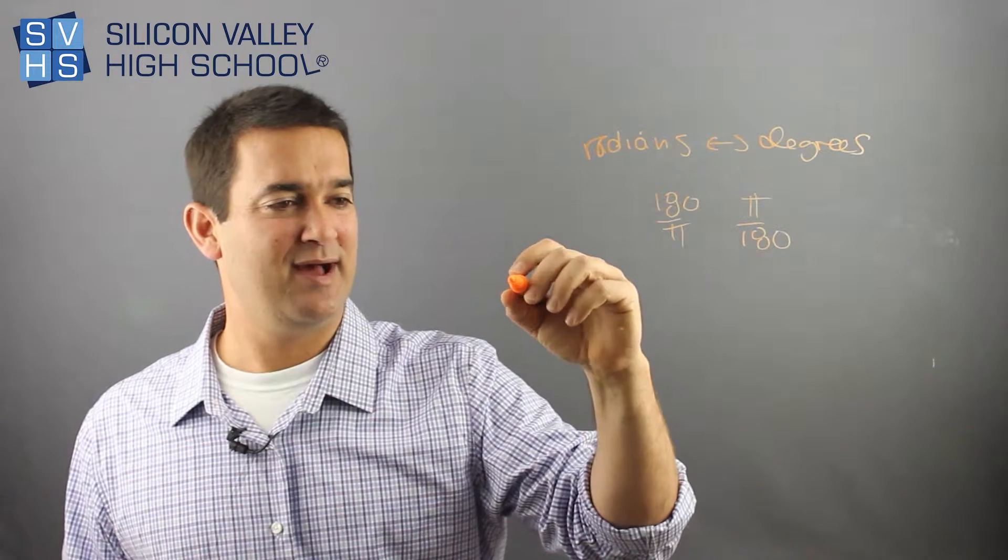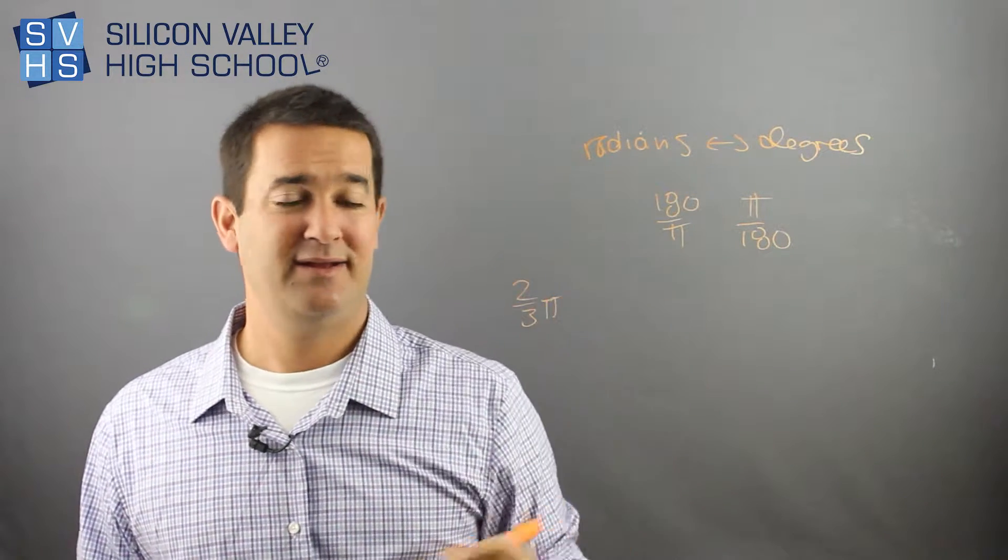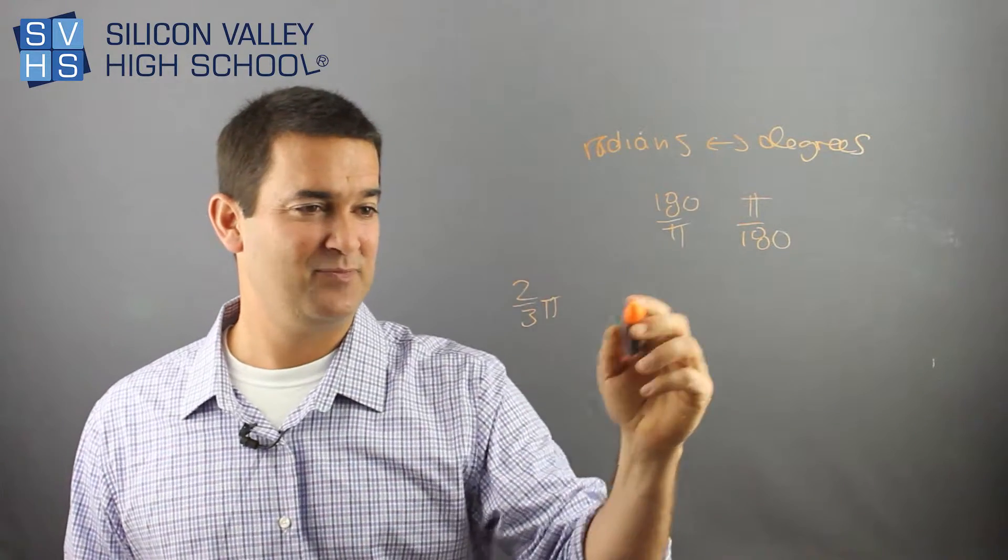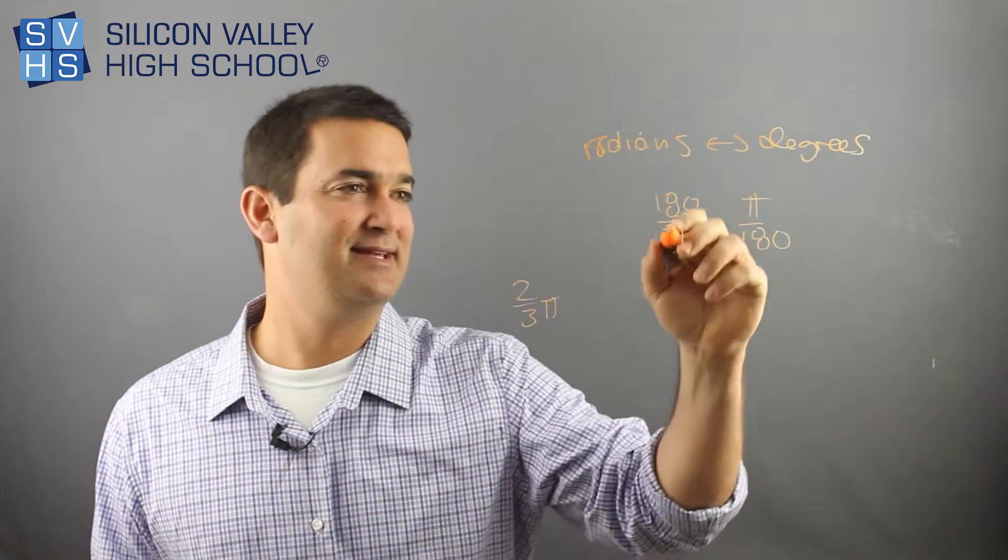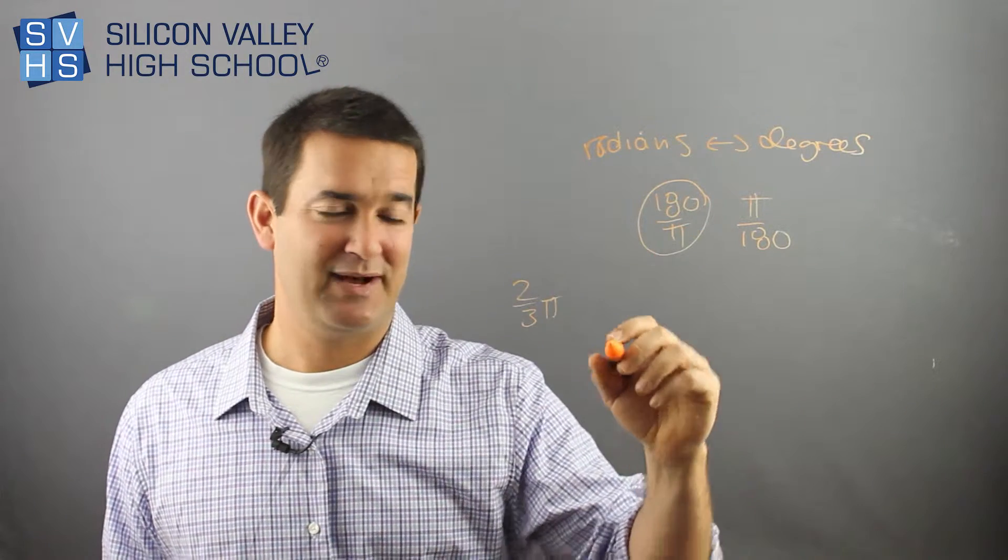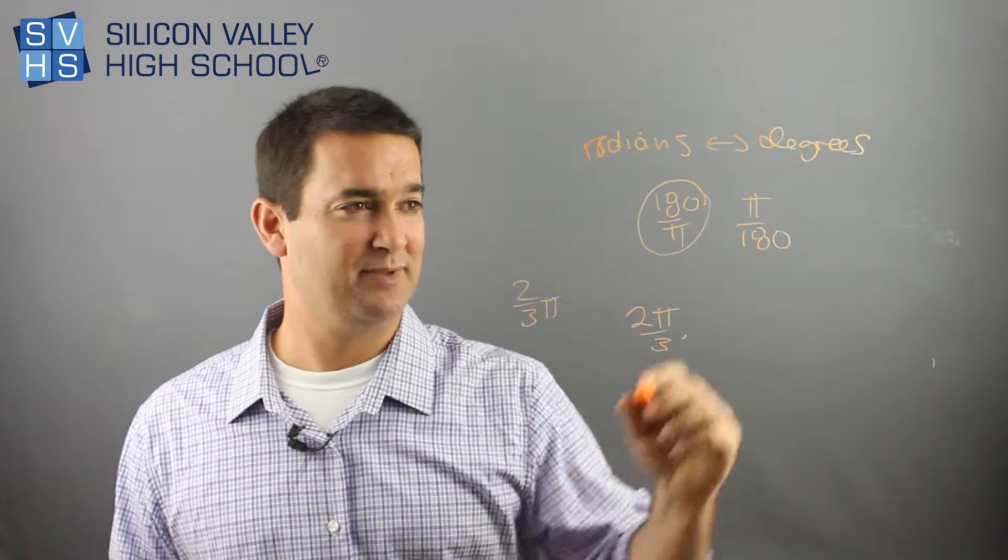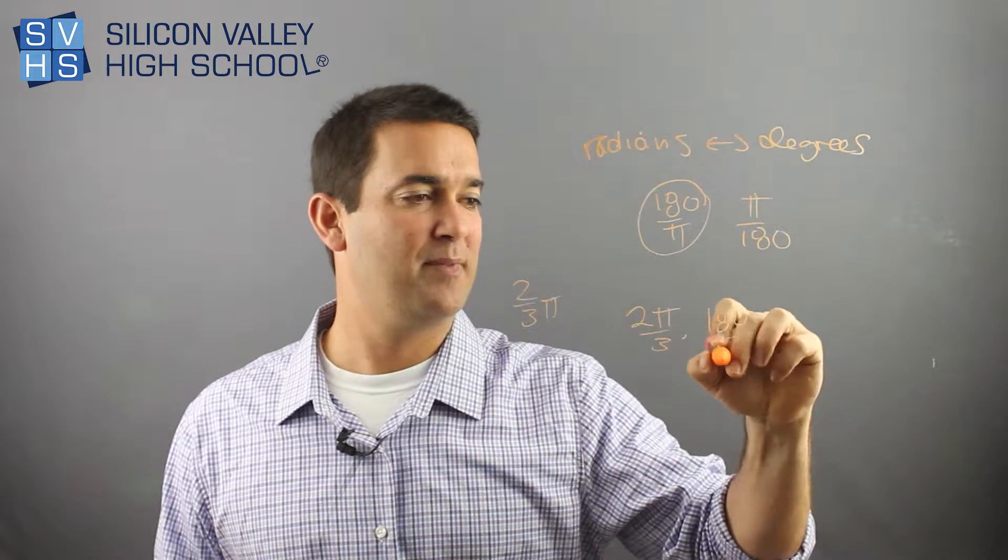Let's say they say you have 2 thirds pi and you want that into degrees. The way I always remember it is this is the one to go from radians to degrees. And the reason is that you want the pi's to cancel. So look at this. If you had 2 pi over 3, you'd multiply it by 180 over pi.